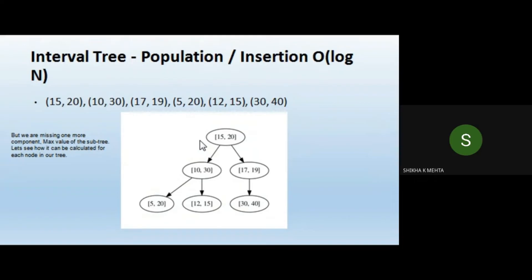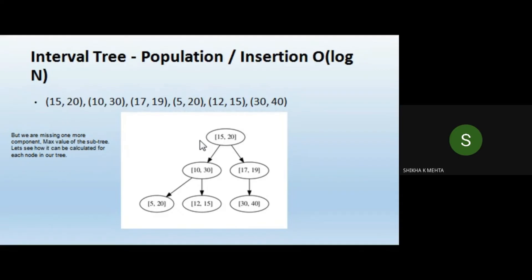This is the final interval tree we are able to create. The max value of the subtree is still missing. When creating the interval tree, two things are stored in each node: the range itself, and the maximum value of the subtree rooted at that node. This maximum value plays a very important role when performing certain operations.